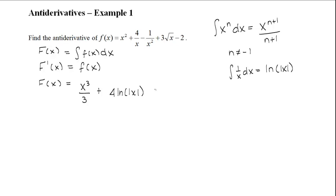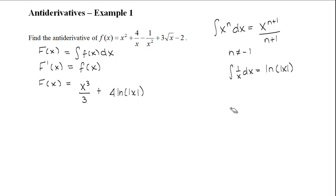For the third term, we have 1 over x squared, which is the same as x to the power of negative 2. When we add 1 to negative 2, we get negative 1, and then we divide by negative 1. So it will be minus x to the power of negative 1 divided by negative 1.